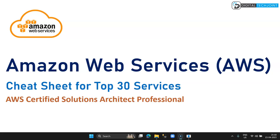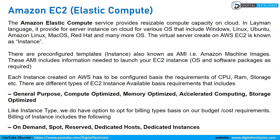The first service is Amazon EC2 — Elastic Compute. Amazon Elastic Compute service provides resizable compute capacity in the cloud. In layman's language, it provides a server instance on cloud for various operating systems including Windows, Linux, Ubuntu, Amazon Linux, Mac OS, Red Hat, and many other OS. The virtual server created on AWS EC2 is known as an instance — it is as good as setting up a server on your on-premises environment.